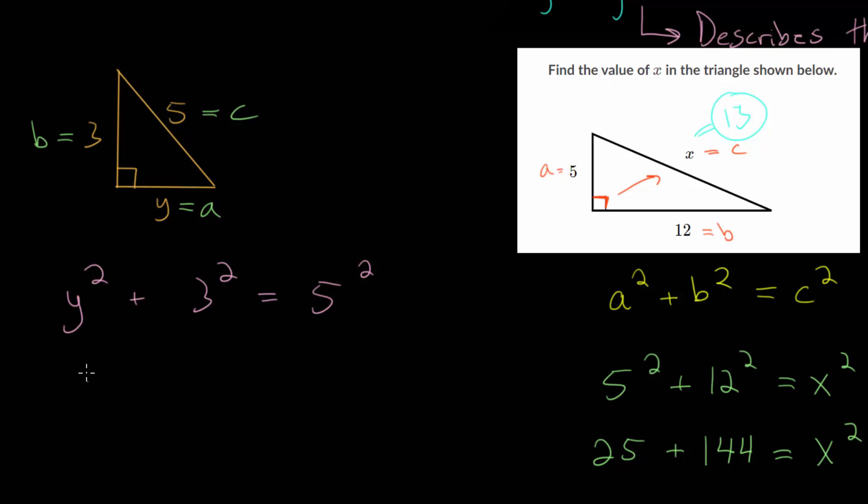And now we can just simplify. So Y squared plus 3 times 3 is 9. 5 times 5 we know is 25. And we need to solve this equation for Y squared. So we can cancel out this addition by 9 by doing subtraction by 9. So we get that Y squared is 25 minus 9, which is 16.